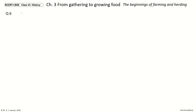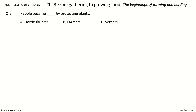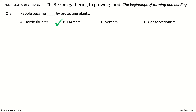Question 6. People became what by protecting plants. The options are: horticulturists; farmers; settlers; conservationists. And the answer is farmers.